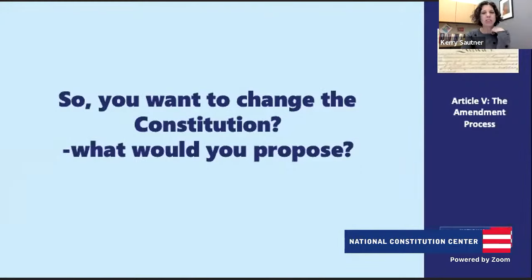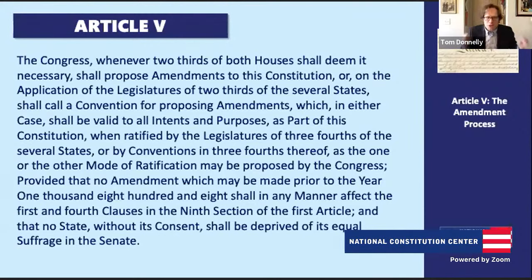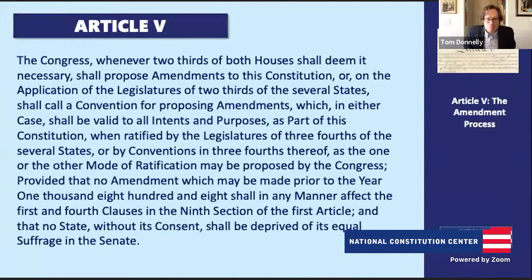When we're thinking about changing the Constitution, we better start with how does it actually work. If you're looking at the Constitution, turn to Article 5 to see the amendment process. Here's a really, really big block of text. But the big idea here is that the founding generation didn't believe that it had a monopoly on constitutional wisdom. They believed that we as a people were going to learn lessons over time and that we'd be able to make the constitutional system better.